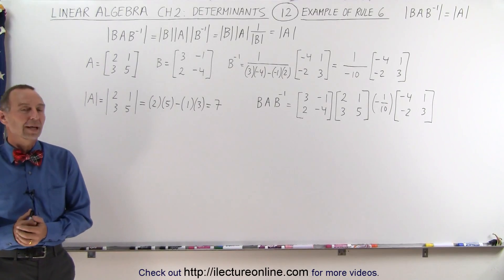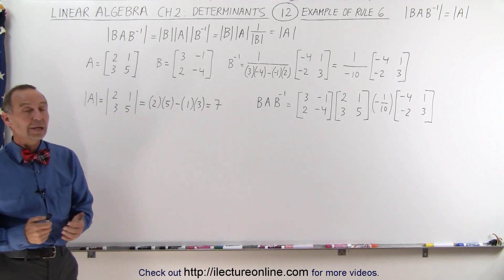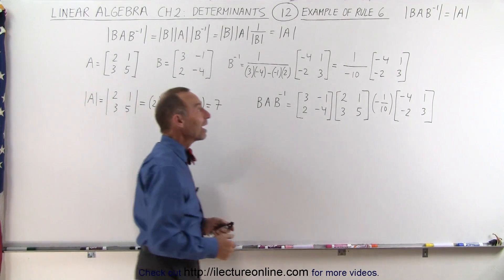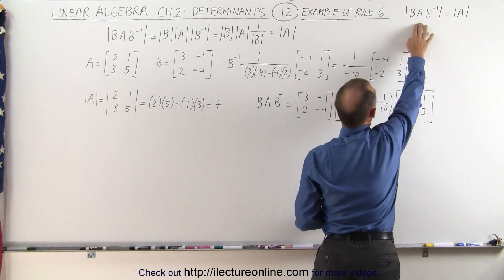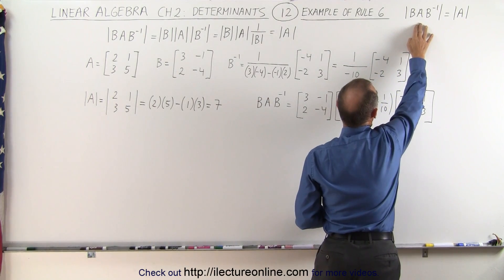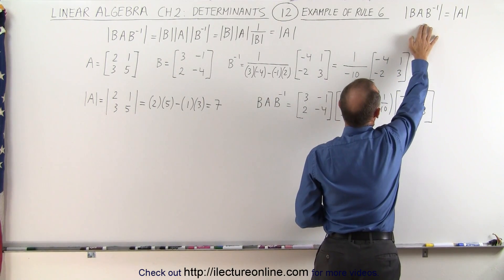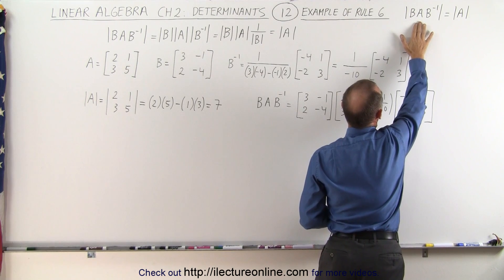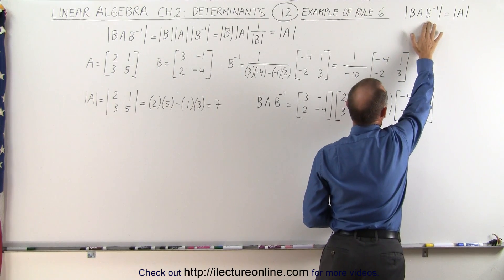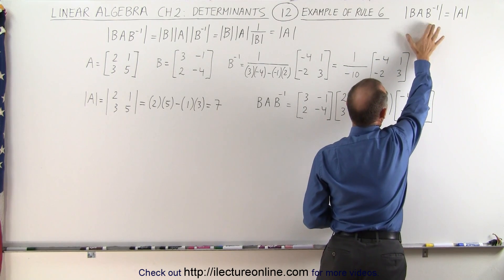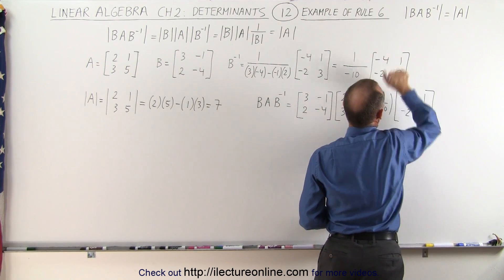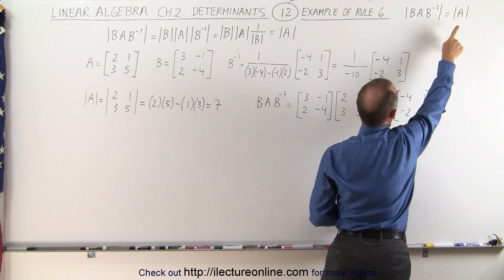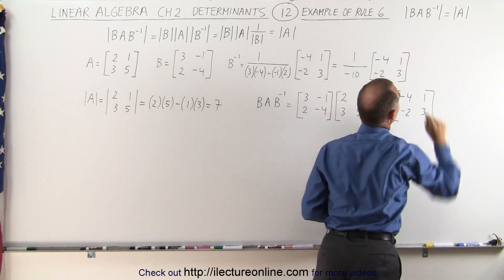Welcome to ElectronLine. Here we're going to show that if you have a matrix A and then you multiply it in this order — matrix B times matrix A times the inverse of matrix B — and then you take the determinant of that product, that should equal the determinant of matrix A.